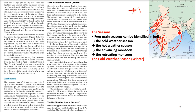The winds from the Bay of Bengal branch enter from inside and bring rain to central and eastern India. But by the time they reach the Thar desert area and the Gujarat region, they are already devoid of moisture. This is how the Thar region and the upper part of Gujarat do not receive that much rain.